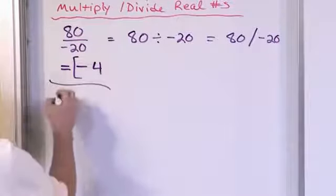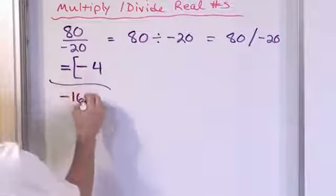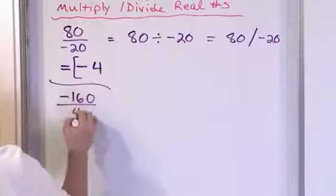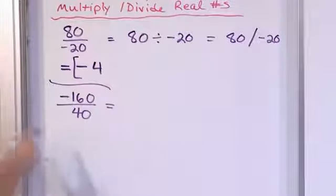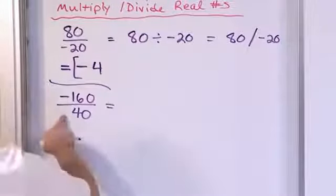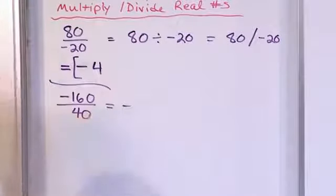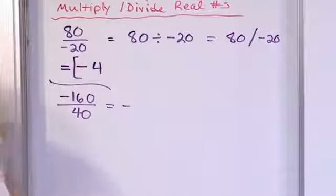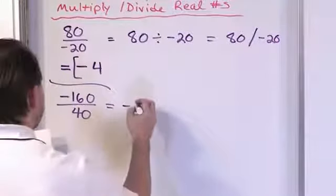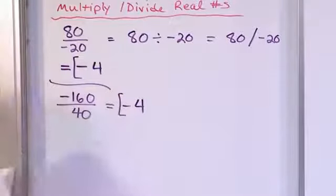Let's do another one. Negative 160 divided by 40. I have a negative divided by a positive, so the signs are different — that means I'm always going to have a negative answer. I don't have to look at anything else. 160 divided by 40 is 4, so the answer is negative 4.